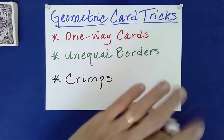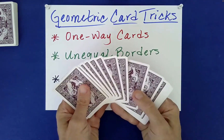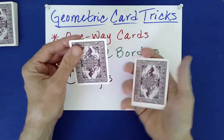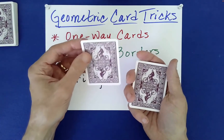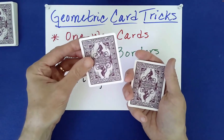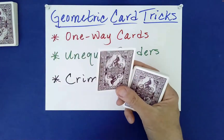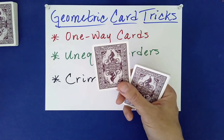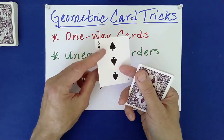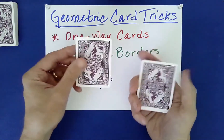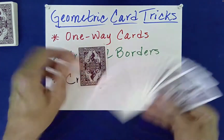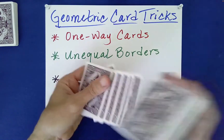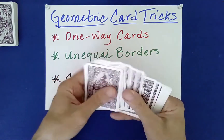Now what I need you to do is just randomly choose one of the cards. It truly is a random choice, so maybe you choose that one right there. Take a look at it. Unfortunately, because I don't have a spectator here, I'm going to have to see the card — which in this particular case is very unfortunate — but I'll explain to you how it would actually work if you had a spectator who saw the card and you didn't as a performer.